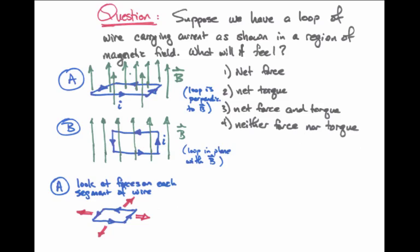In this case, the loop of wire in picture A has no net force, because all the segments of wire have a force that tend to counteract one another. Since there's no force, there's also no net torque, because torque is R cross F.